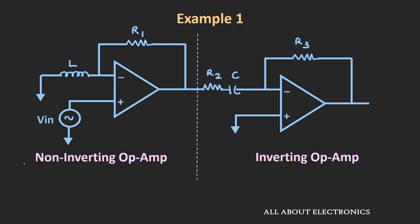We know that for the non-inverting op-amp, the gain can be given by the expression 1 plus Z2 divided by Z1, where Z1 and Z2 can be either resistor, capacitor, or inductive reactance. In this particular case, for this portion, Z2 is equal to R1 and Z1 is equal to the reactance of this inductor, that is equal to XL.